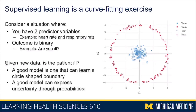Supervised learning is a curve fitting exercise. Different models are just learning a representation of the data — they're not doing anything special. So you shouldn't try to attach special significance to the neurons in a neural net, the trees in a decision tree, or the coefficients in a linear model, or think that one of these representations is clearly better than another.